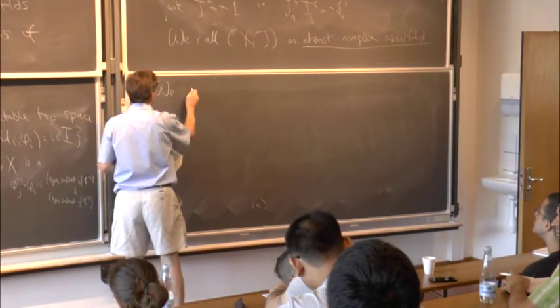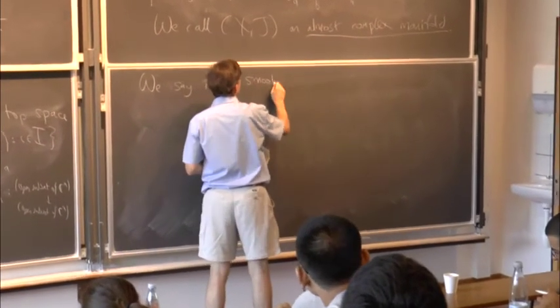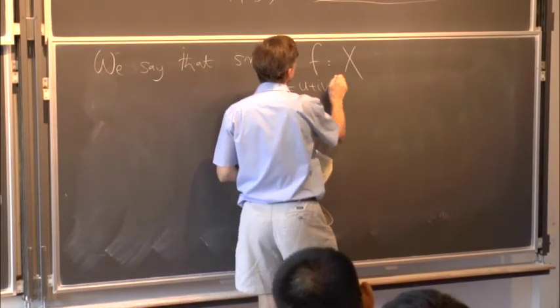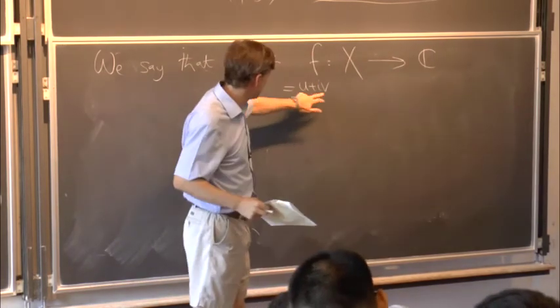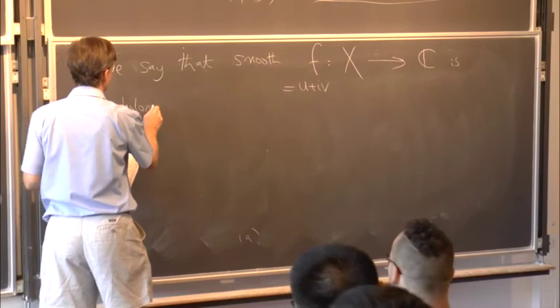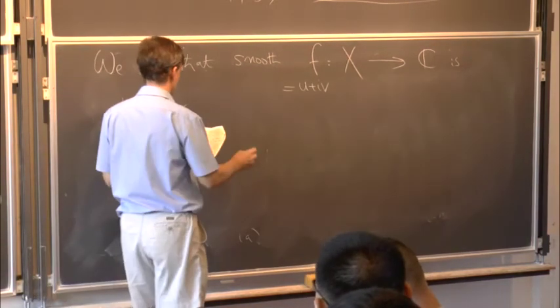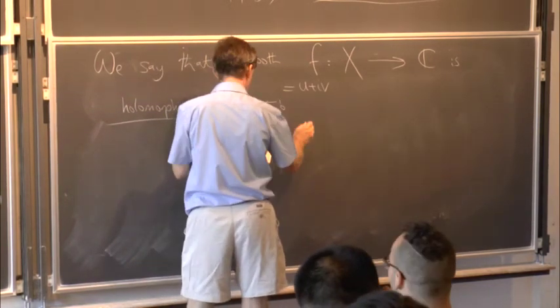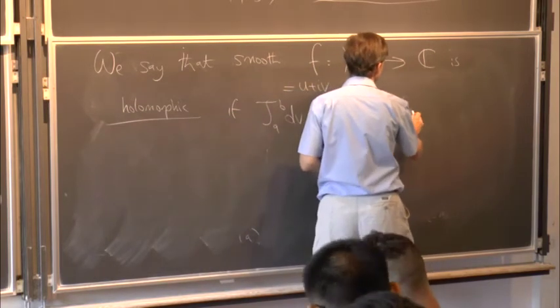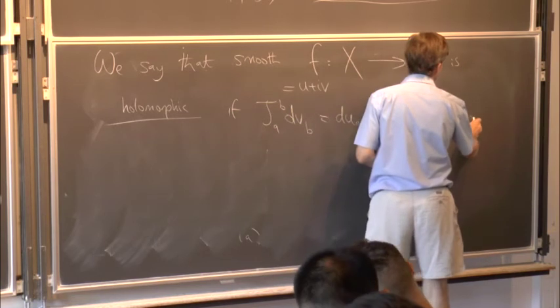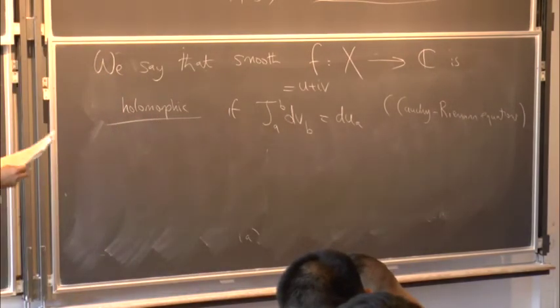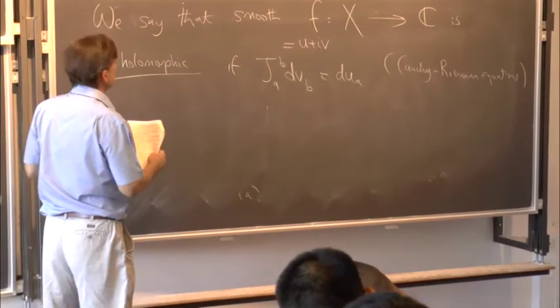So next let's define, we say that some smooth function, that little f going from X, f which can also be u plus i times v, f going from X into the complex numbers, so u is the real part, v is the imaginary part, is holomorphic if on the derivatives, J lower A B times dv_B is equal to du_A. So this is just the kind of standard Cauchy-Riemann equations of complex analysis, at least if you do this on, let's say, if X is the complex numbers with the obvious almost complex structure.